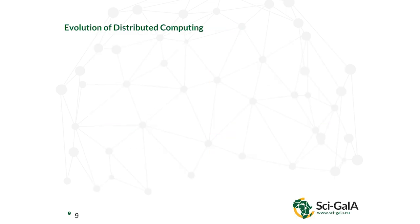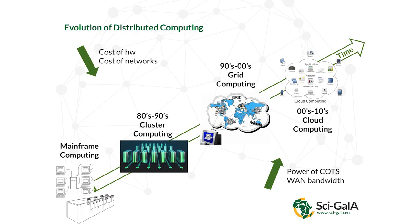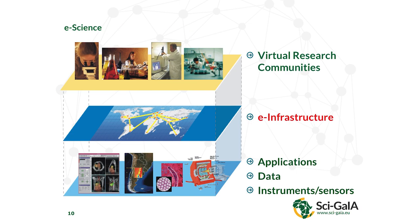In the last 30 years or so, scientific computing evolved very quickly — from a centralized approach with mainframe computing up to the 70s, then to cluster computing, grid computing, and lately cloud computing. This was possible due to a combined effect of reduction in hardware and network costs, and the increase in power of commercial off-the-shelf components and the bandwidth of wide area research and educational networks. A new word was coined 15 years ago: the concept of e-science, which is science done with electronic infrastructure.